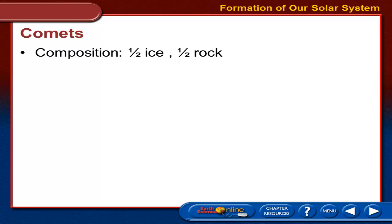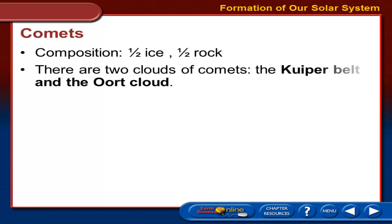Comets are a little bit different — they are not just rock, but more ice. Half ice, half rock. They have their own places where they're found. Past the ice line, you can get more ice forming. Comets are either found in the Kuiper Belt, which is just beyond Uranus and Neptune, or in a place even farther out known as the Oort Cloud.